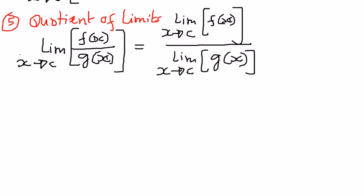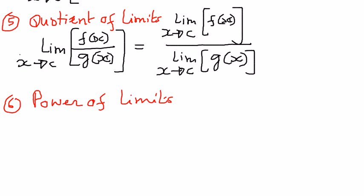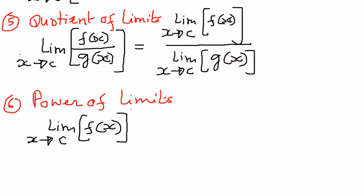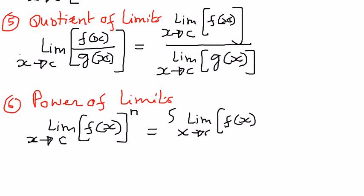The sixth operation is the power of limits. If we have the limit of a function f of x as x tends to c, and this whole thing is raised to the power of n, we can write this as the limit of f of x as x tends to c, with that whole operation raised to the power of n. That is the power operation of limits.